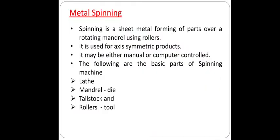Metal spinning is a sheet metal forming process of parts on a rotating mandrel using rollers. It is used for axis-symmetric products and may be either manual or computer controlled. The basic parts of a spinning machine are: the lathe, the mandrel (also called the die), the tailstock, and the rollers (also called the tool).